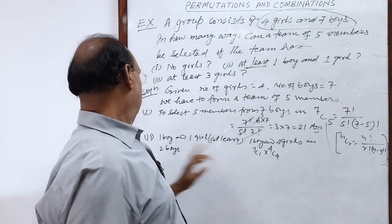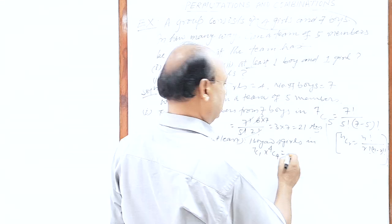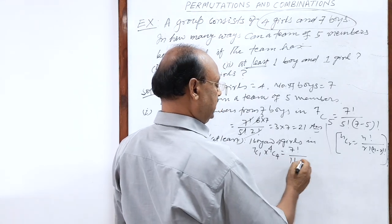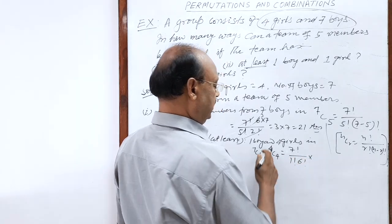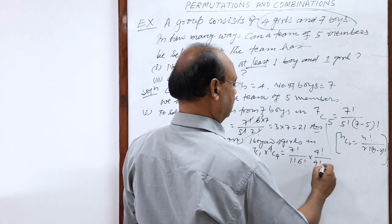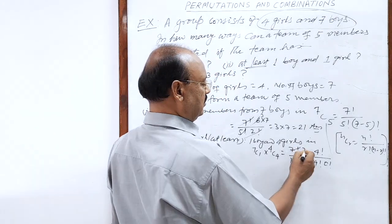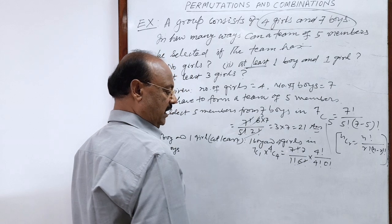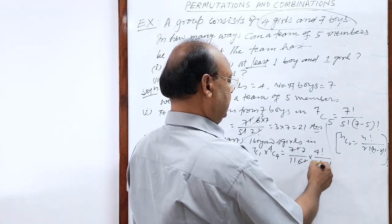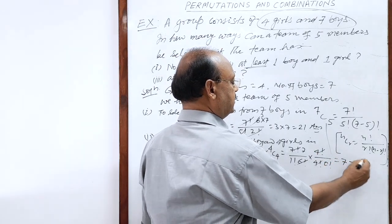By simplifying: seven C one equals seven factorial by one factorial into six factorial, and four C four equals four factorial by four factorial into zero factorial. Six cancels giving seven, and four factorial cancels, and zero factorial is one. So this equals seven. This is case number one.